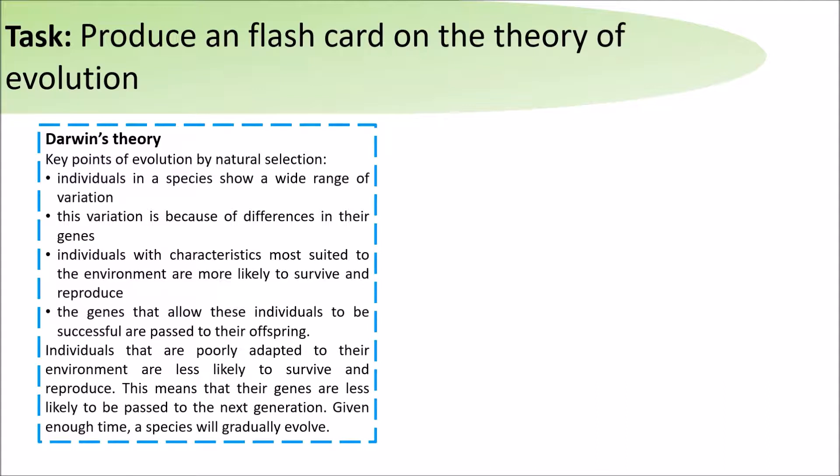The genes that allow these individuals to be successful are passed on to their offspring. Individuals that are poorly adapted to their environment are less likely to survive and reproduce, so their genes are less likely to pass on to the next generation.